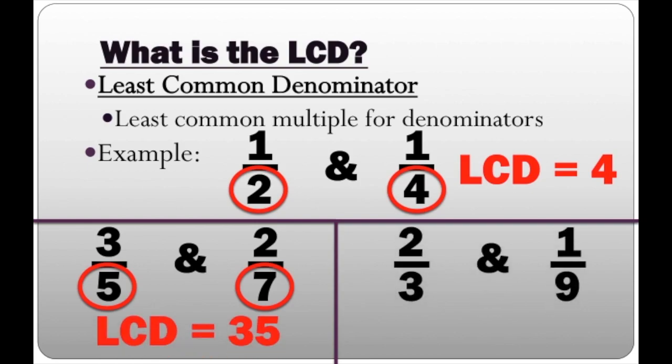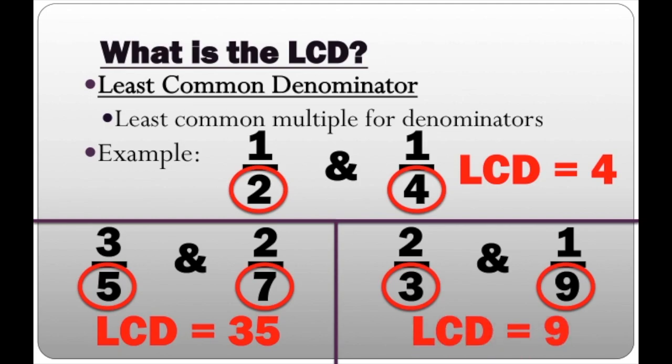How about 2/3 and 1/9? In two thirds, 3 is the denominator. In one ninth, 9 is the denominator. So what's the least common multiple of 3 and 9? The least common multiple is 9. Therefore, the LCD is 9.